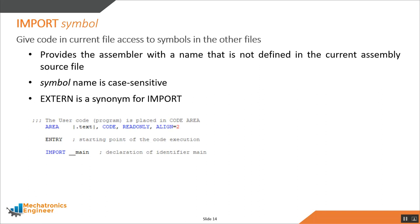The IMPORT assembler directive gives the current file access to symbols defined in other files. The symbol used in the IMPORT directive must be defined with the EXPORT directive in the other source file. EXTERNAL is a similar directive that can also be used in place of IMPORT. Here is an example of the IMPORT directive accessing the symbol 'main' from another source file.